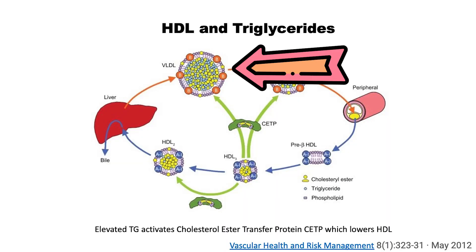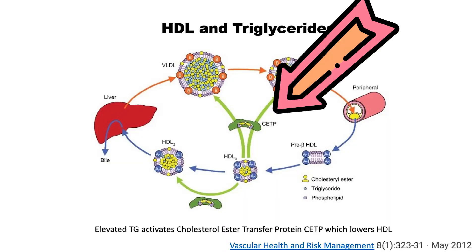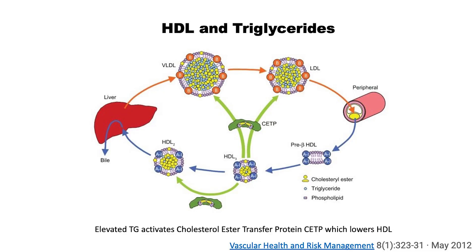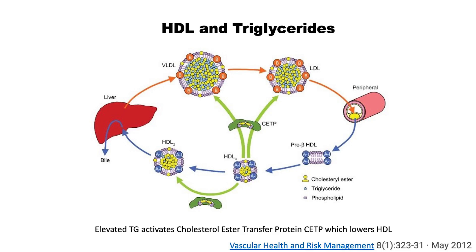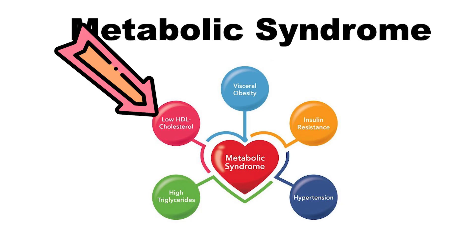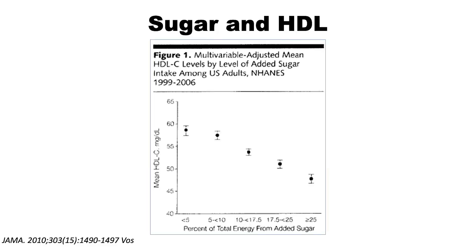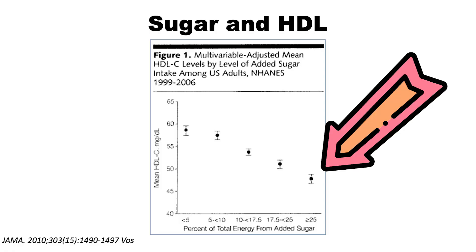High triglycerides lead to a lower HDL because high triglycerides activate something called CETP, or cholesterol ester transfer protein, which then lowers your HDL. That is to say, when triglycerides are high, your HDL tends to go down — and that's a third component of the metabolic syndrome, in addition to visceral obesity and high triglycerides. In the NHANES study, you can see a clear correlation between the amount of added sugar intake in U.S. adults and their level of HDL: as they eat more sugar, they tend to have a lower HDL.